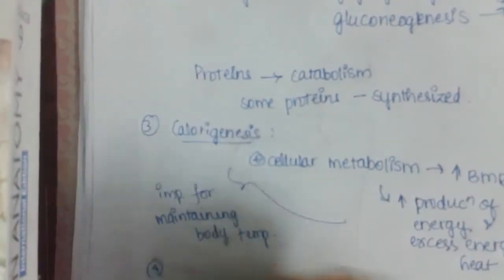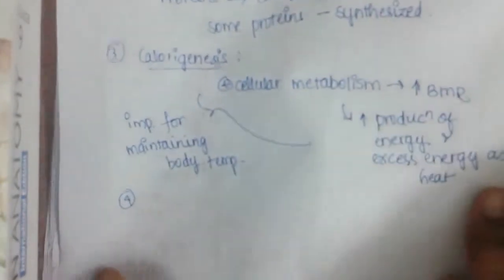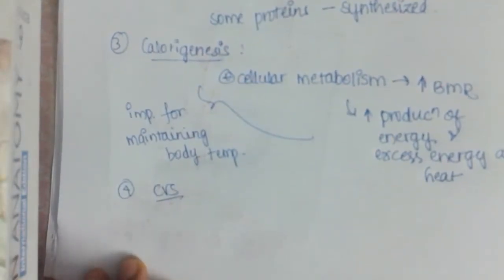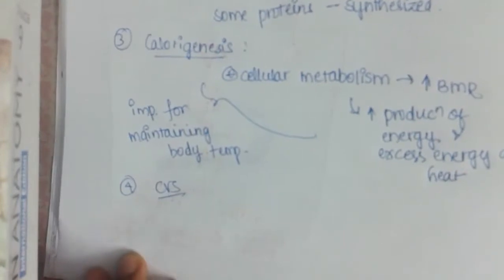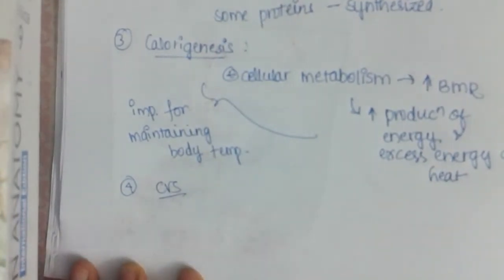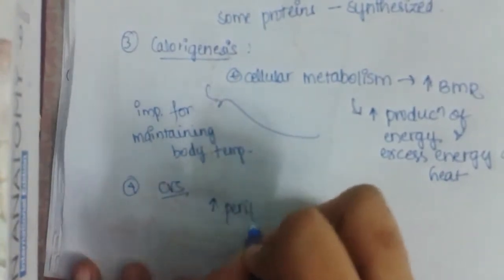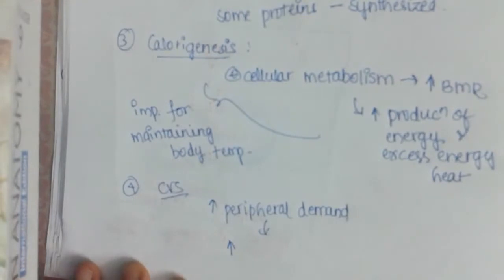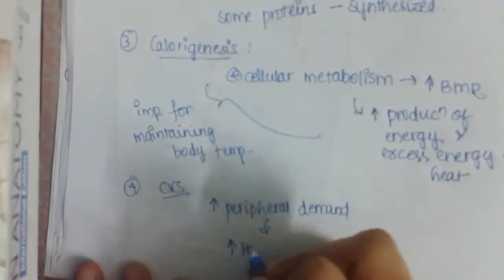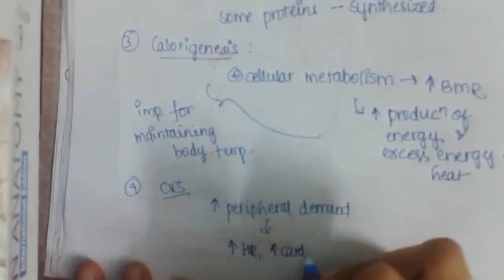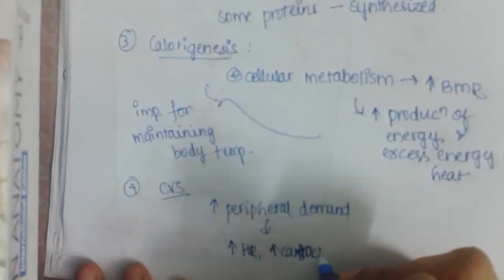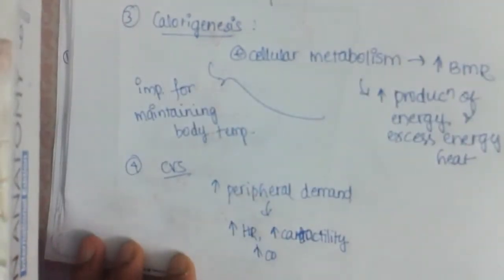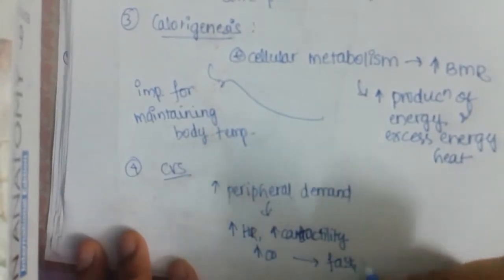It also increases the BMR. The fourth action of thyroid hormone is on the cardiovascular system. Due to thyroid hormone there is increased catabolism and increased metabolism, which leads to increased peripheral demand, increased heart rate, increased contractility, and increased cardiac output, resulting in a fast bounding pulse.